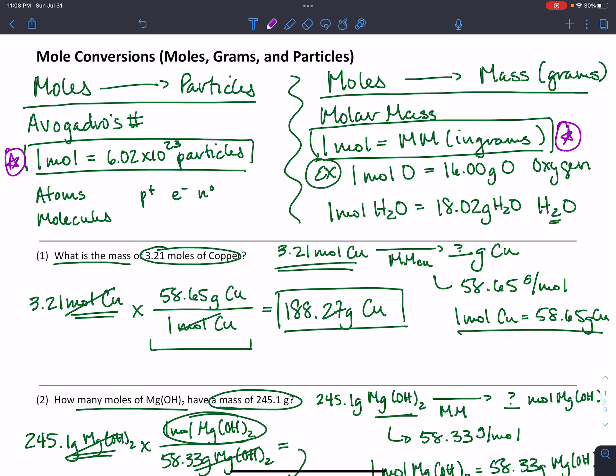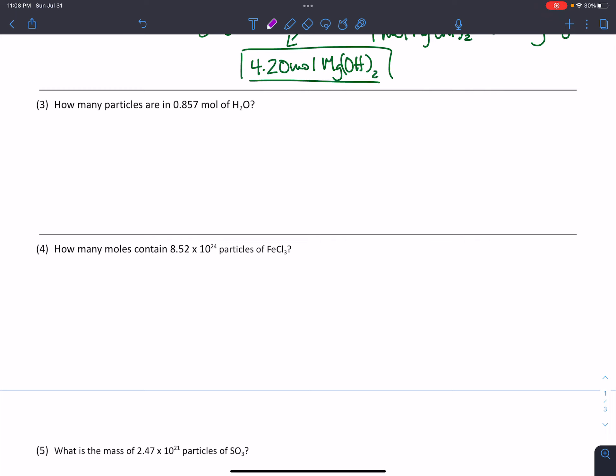So we're going to scroll down to problems three and four. These two problems deal with converting back and forth between moles and particles. If we look at number three, how many particles are in 0.857 moles of H2O? We're given moles of water and we're asked to determine how many particles. So I put a plan together just to get started. Eventually you're not going to need your plan anymore, but it might be a good idea just to get started.